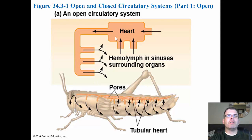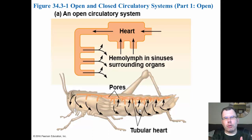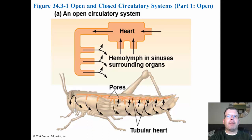In insects and crayfish and clams, they have a big heart and a vessel coming out that pumps hemolymph into the sinuses and surrounding tissues. The tubes are open-ended, so they pump the blood out and all the organs are bathed — that's why when you squish a bug they're kind of juicy, that's the hemolymph bathing their organs. That's how they get oxygen exchange. At the end they have little pores around the heart and that's how the fluid comes back in.